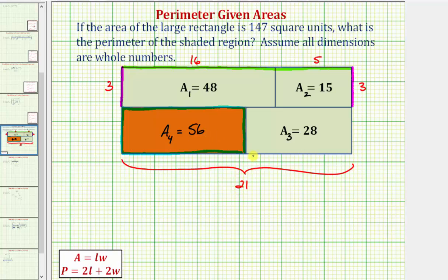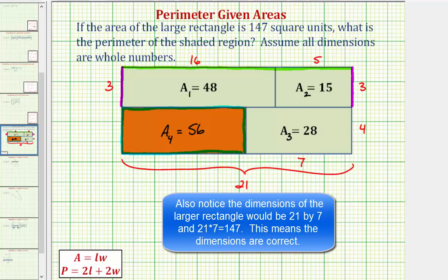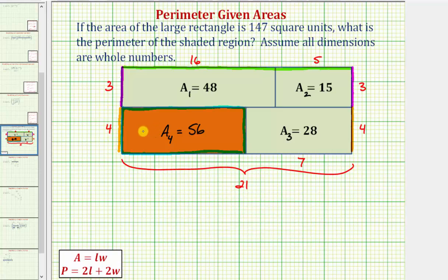This helps us determine the dimensions of the remaining two rectangles. For the rectangle with area 28, the dimensions could not be one by 28 since 28 is greater than 21. So it could be two by 14 or four by seven — let's try four by seven. If this length is four units, the opposite length would also be four units. With the orange rectangle's area being 56 square units, because four times 14 equals 56, this side must be 14 units. Notice this works because 14 plus seven equals 21.